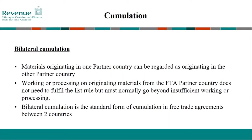Under each free trade agreement, there is the concept of accumulation, which allows materials originating in one partner country to be considered as originating in another partner country. For example, goods originating in Canada can be considered in the same way as goods originating in the EU. Bilateral accumulation is the standard form where there are only two partners to the FTA, and this is the basis on which the ongoing EU-UK negotiations are being discussed.